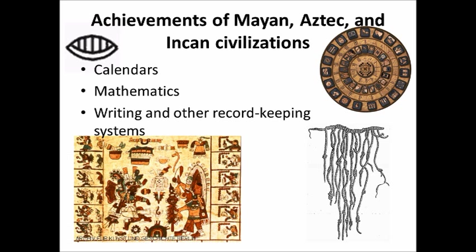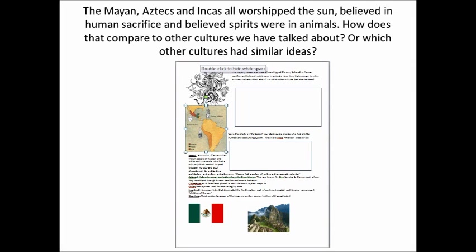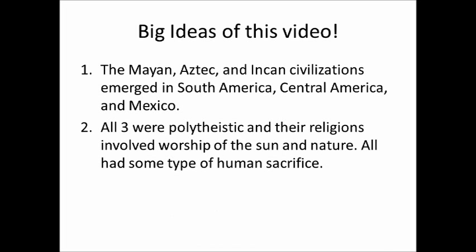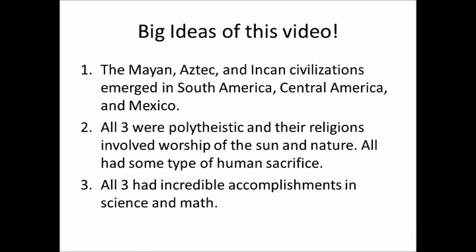Here's the Kipu system. In your notes, compare the Maya, Aztec, and Incas — they all worshipped the sun, believed in human sacrifice, and believed spirits were in animals. How does this compare to the other cultures we've talked about? The big ideas of this video: the Mayan, Aztec, and Incan civilizations emerged in South America, Central America, and Mexico. All three were polytheistic with religions involving sun and nature worship. All had some type of human sacrifice, and all three had incredible accomplishments in science and math.